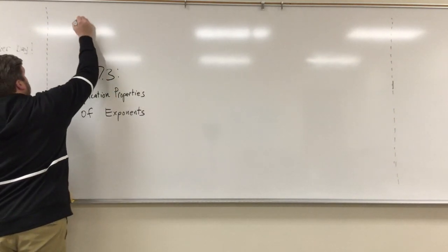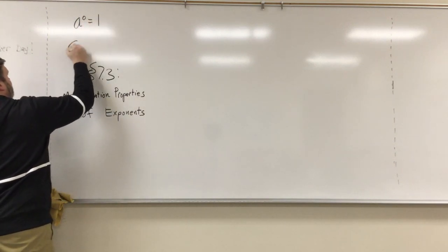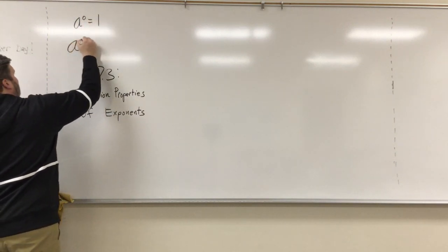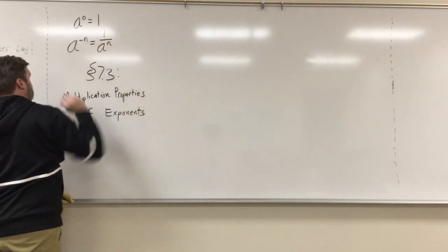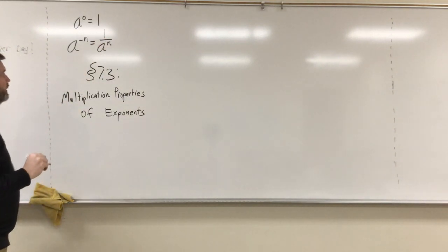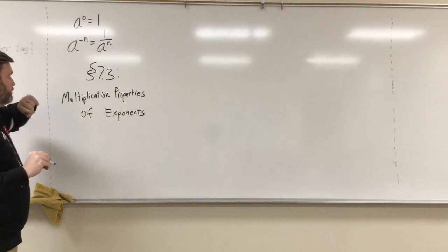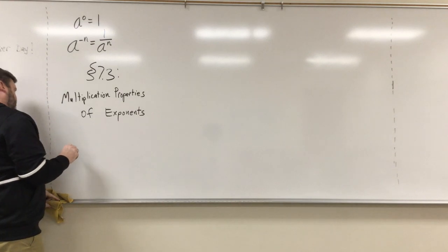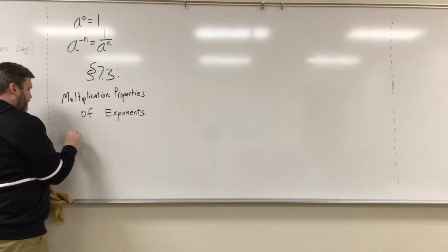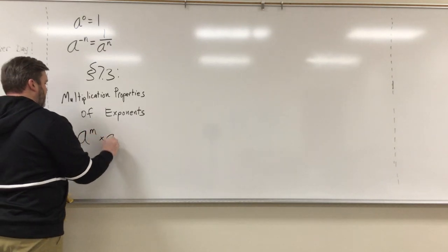Two more rules — remember our section 7.1 rules in case they come back up: anything to the zero is one, and anything to the negative exponent is one over a to the positive exponent. But we learned you can just do the downstairs-upstairs thing. Hopefully we remember that. The two rules we're going to need for this lesson are: if you multiply like bases, you keep the base and add the exponents.